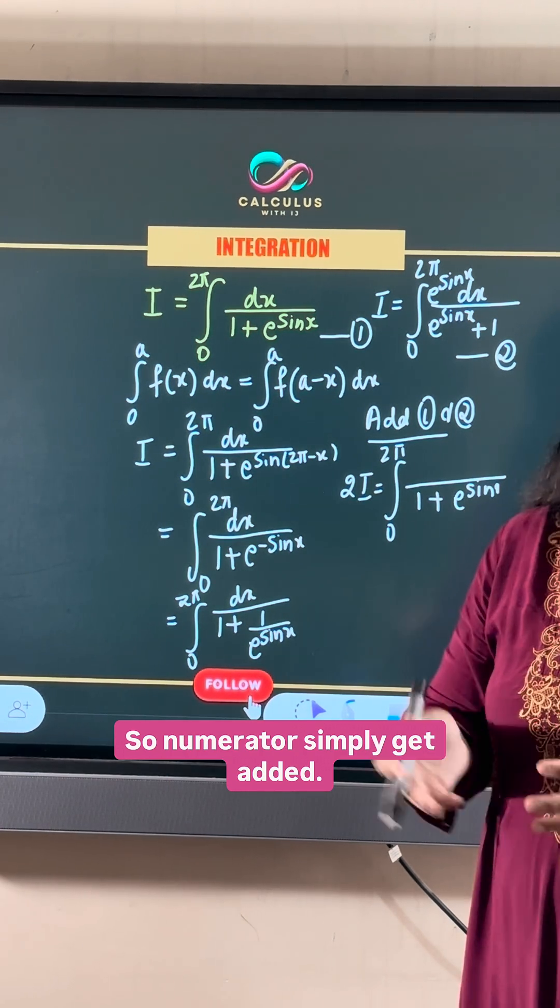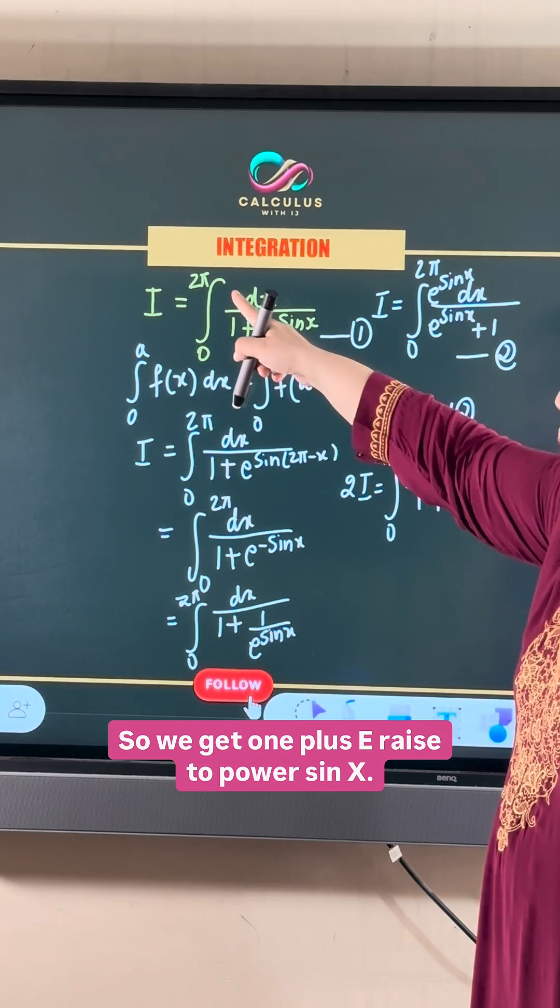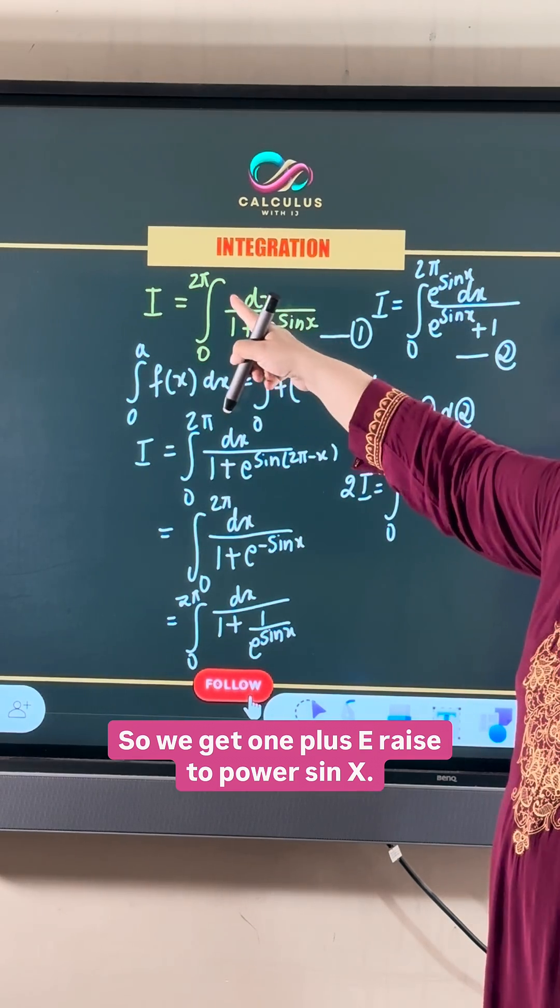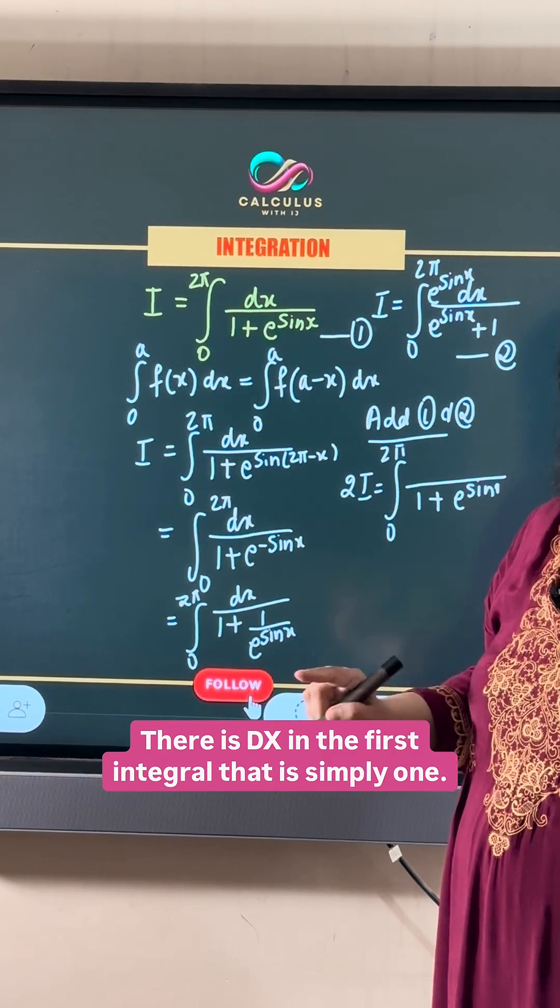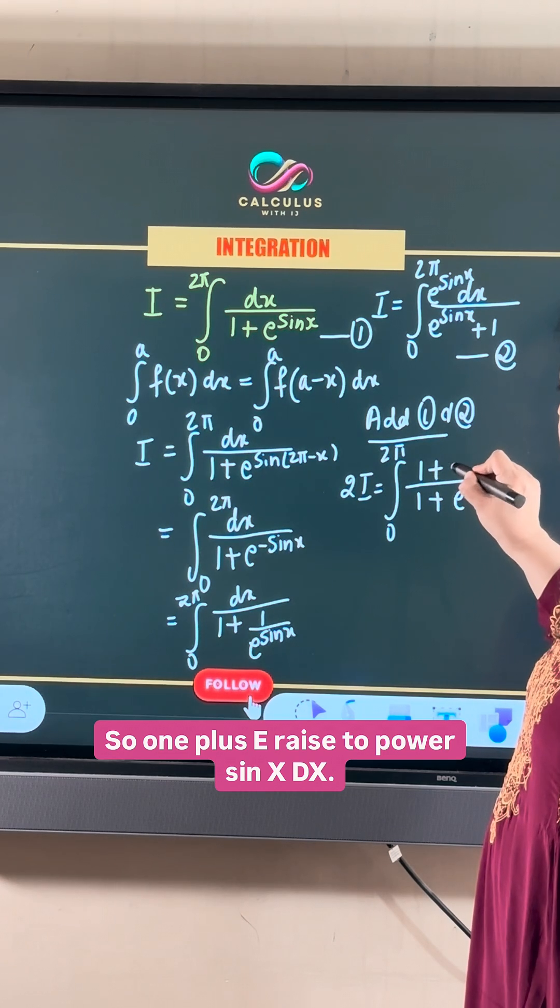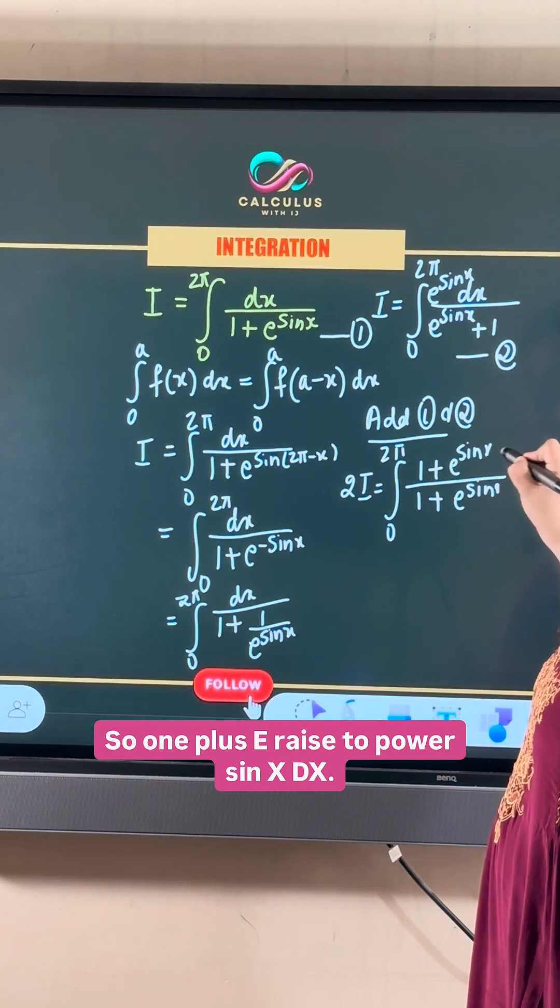So the numerators simply get added. We get 1 plus e raised to power sin x dx. The numerator and denominator get cancelled out.